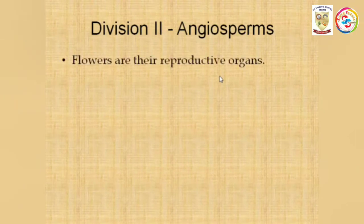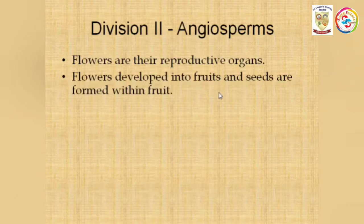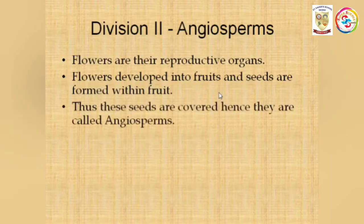The second division is angiosperms. Flowers are their reproductive organs — these are the flowering plants with a special structure for reproduction. Flowers develop into fruits, and seeds are formed within the fruits. The seeds of angiosperms are enclosed within the fruits, so these seeds are covered.